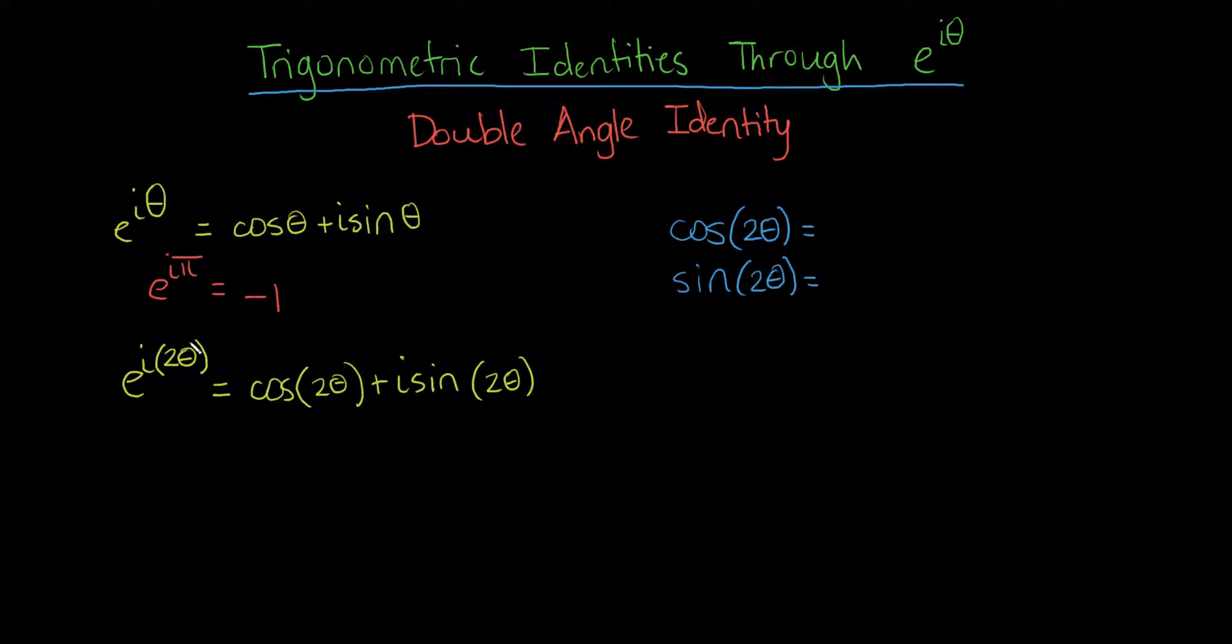What we can do, though, is something very interesting. Because this is part of an exponentiation problem, this 2 can be put to another exponent. We could say e to the i 2 theta is the same as e to the i theta, squared.